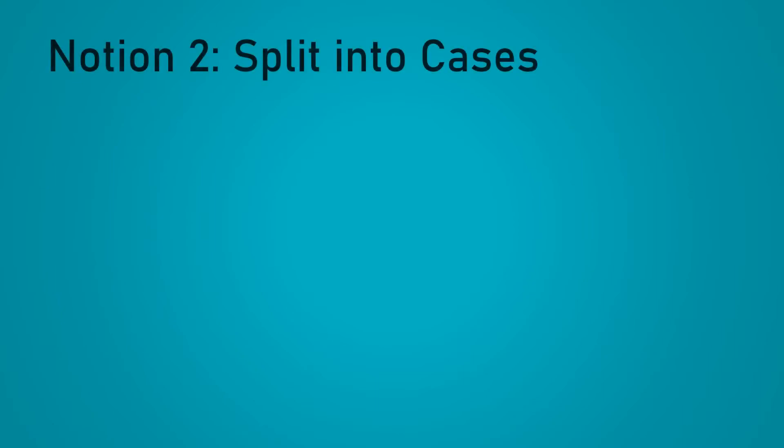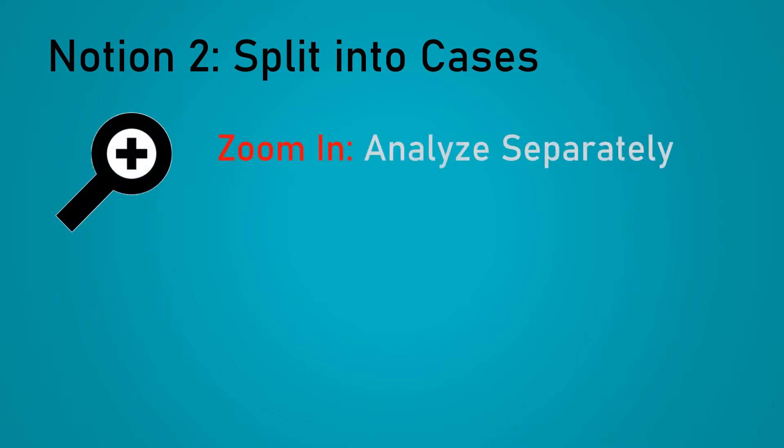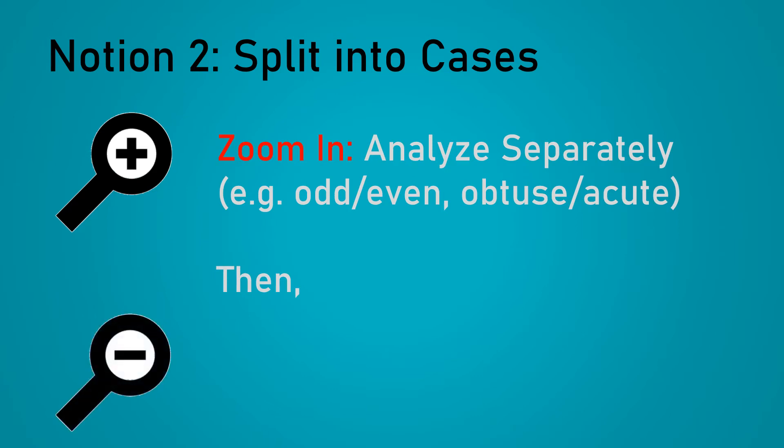And our second notion of zooming in and out comes from splitting into cases. We start by zooming in, which is to analyze one of the cases at a time. And these cases could be things like whether n is odd or even, or maybe the angle a is obtuse or acute. If we manage to successfully tackle one case, we then zoom out and try to apply whatever we have done for that one case to everything else.